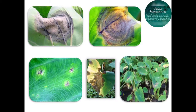These spots increase in size as they form big patches and quickly destroy the leaf. In dry weather or on some resistant cultivars, the center of lesions becomes papery and falls out, producing a shot-hole appearance. This is a particular mark of identification of Phytophthora blight, as you can see in the image.